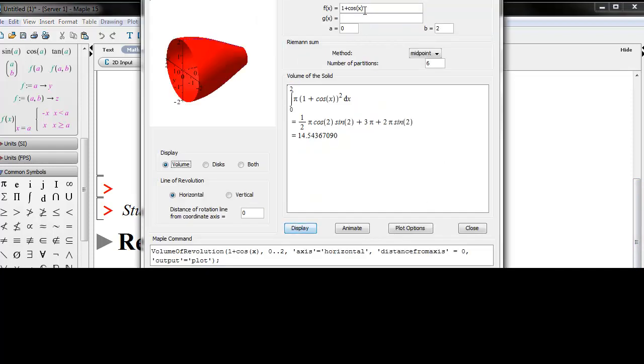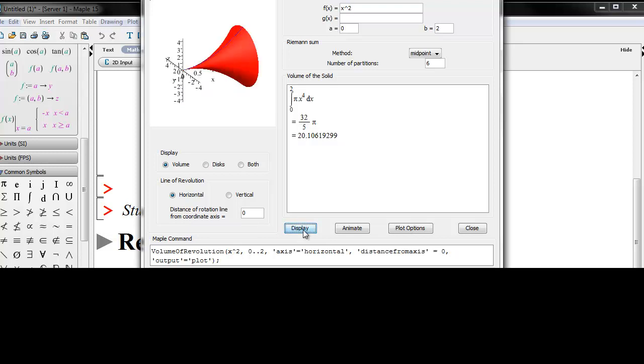Now, recall that the curve we're plotting is f of x equals x squared. We're going from x equals 0 to 2. And we want the volume. And we're revolving around the horizontal line. And the distance of rotation from the coordinate axis is 0 units. We are revolving around the horizontal axis. So let's display that.